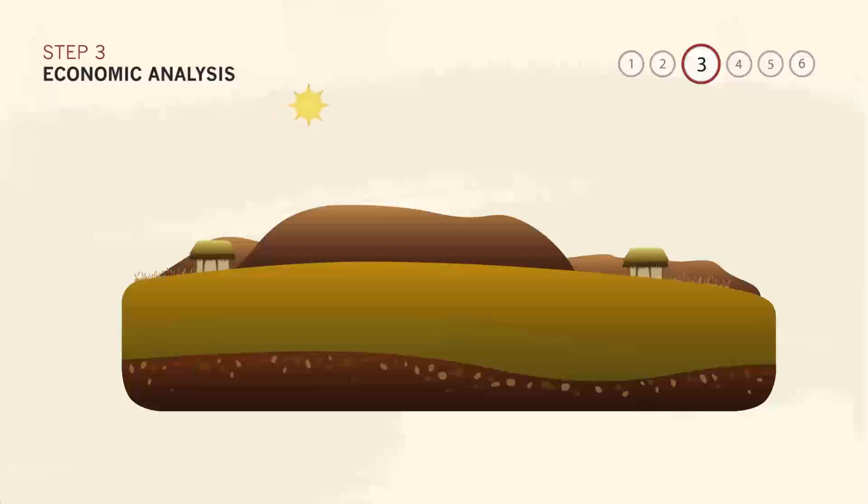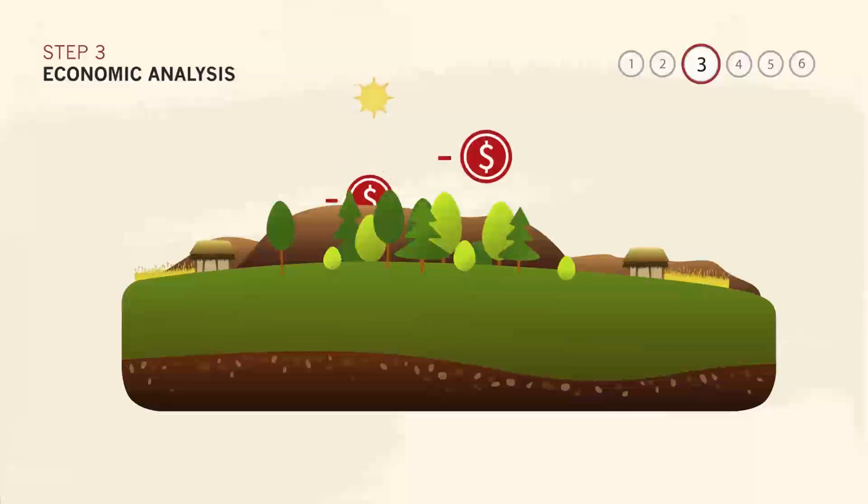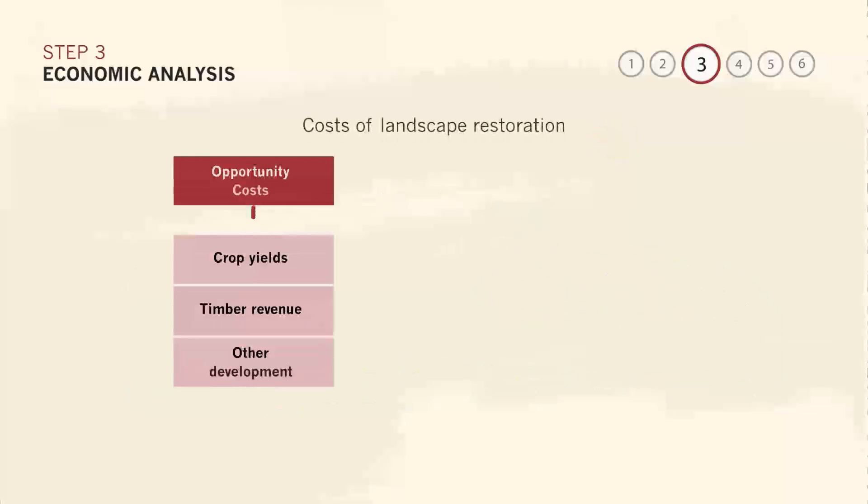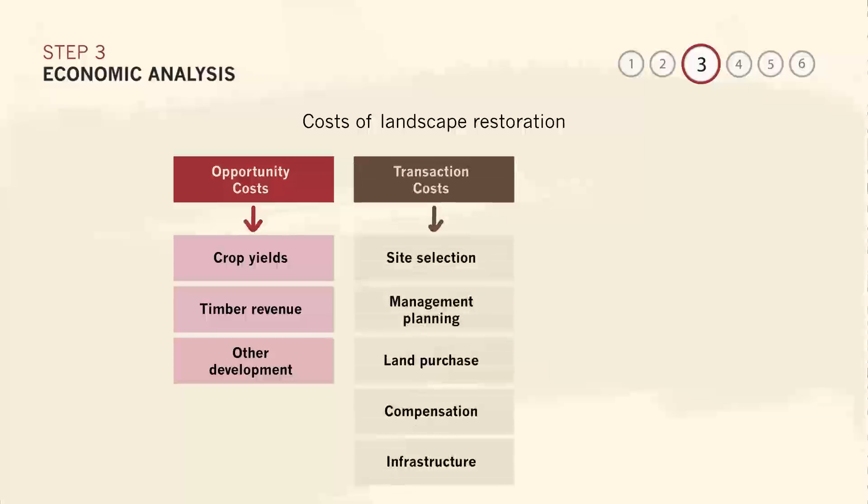The goal here is simple – to estimate the full flow of ecosystem goods and services that each priority restoration activity will produce minus the costs of that activity. Restoring buffer zones around protected forests can result in more fuel wood for local communities, for example, but it can also expand opportunities for ecotourism in the region. In this phase of ROAM, benefits like these are identified, monetized and compared. Costs can include opportunity costs, transaction costs and implementation costs.